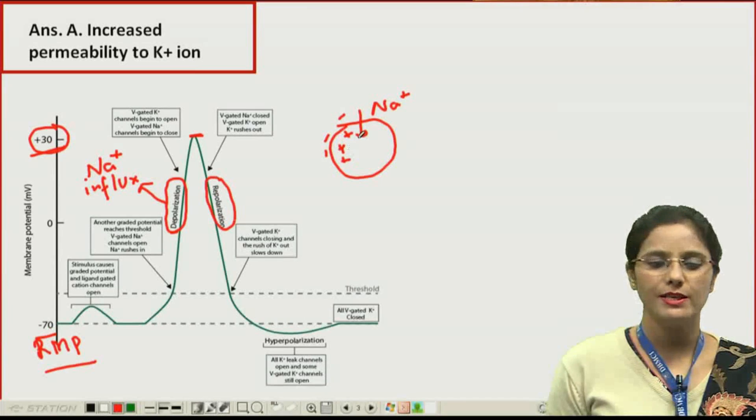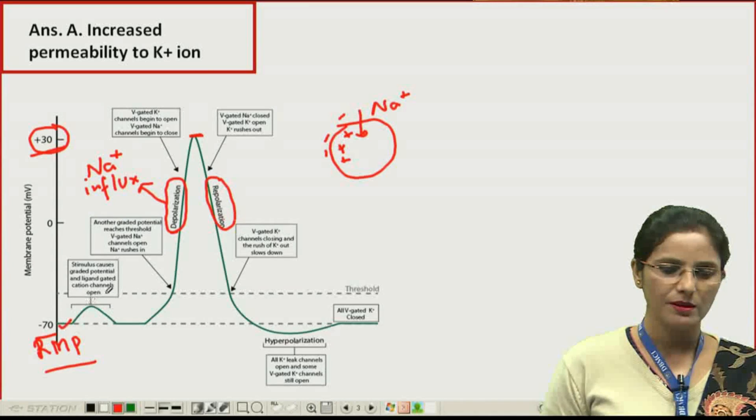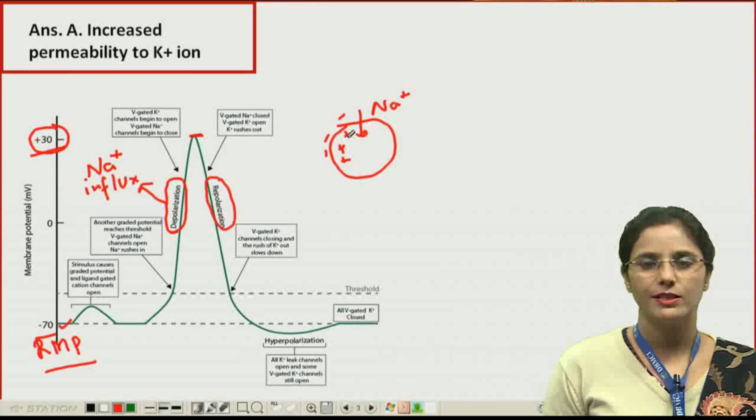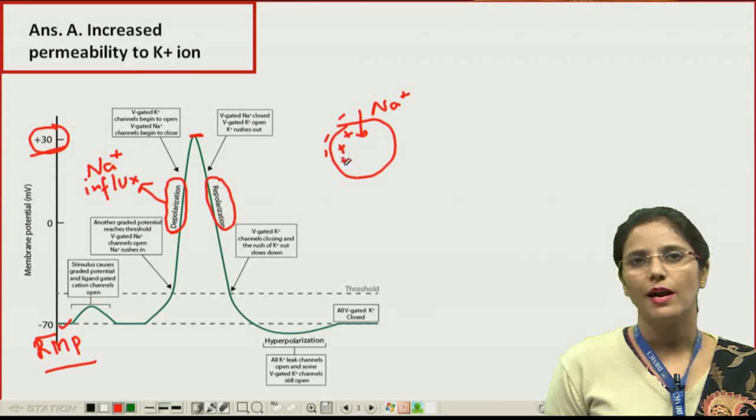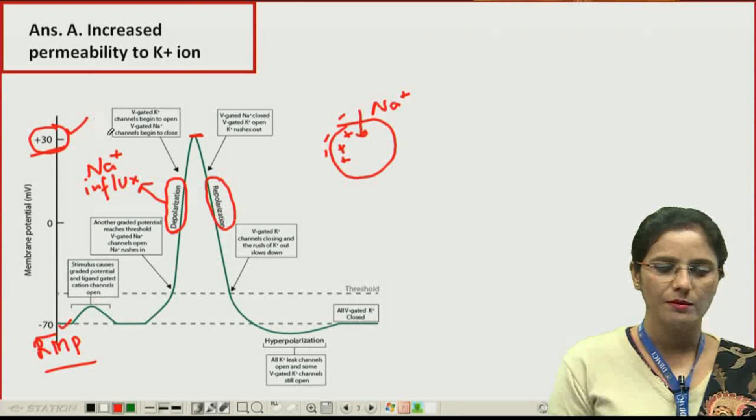In the resting membrane potential, the polarity inside is minus, intra-negative, which is minus 70 millivolt. During depolarization, sodium influx increases the positivity inside and this goes to plus 30.